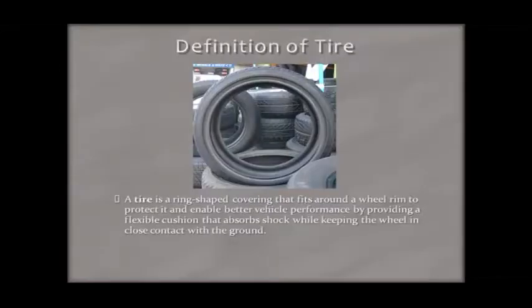A tire is a ring-shaped covering that fits around the wheel rim to protect it and enable better vehicle performance by providing a flexible cushion that absorbs shock while keeping the wheel in close contact with the ground.